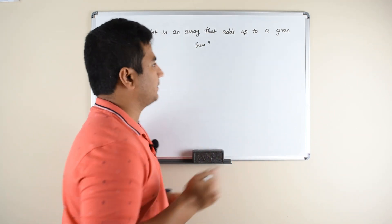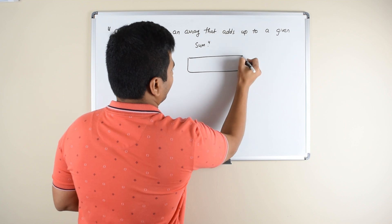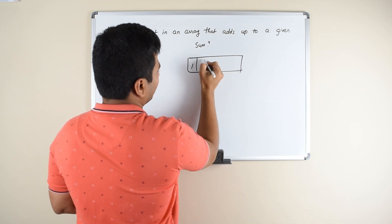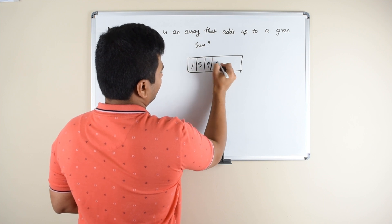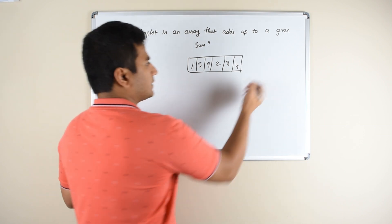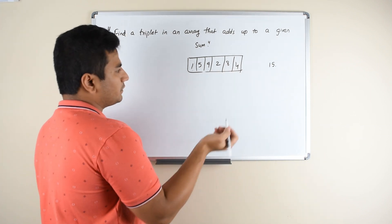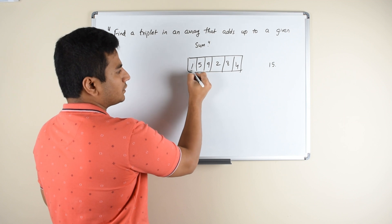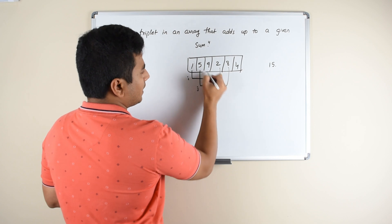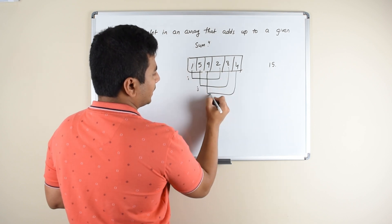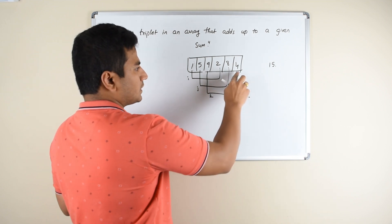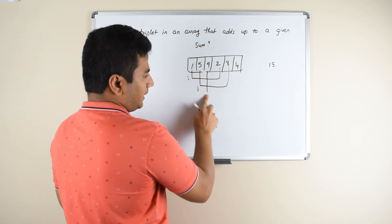Let us take this example again. You have the same array one, five, nine, two, eight, four. And the sum is again 15. So in the previous video what we did was we have an iteration from here to here for I, iteration from here to here for J, and iteration from here to here for K.